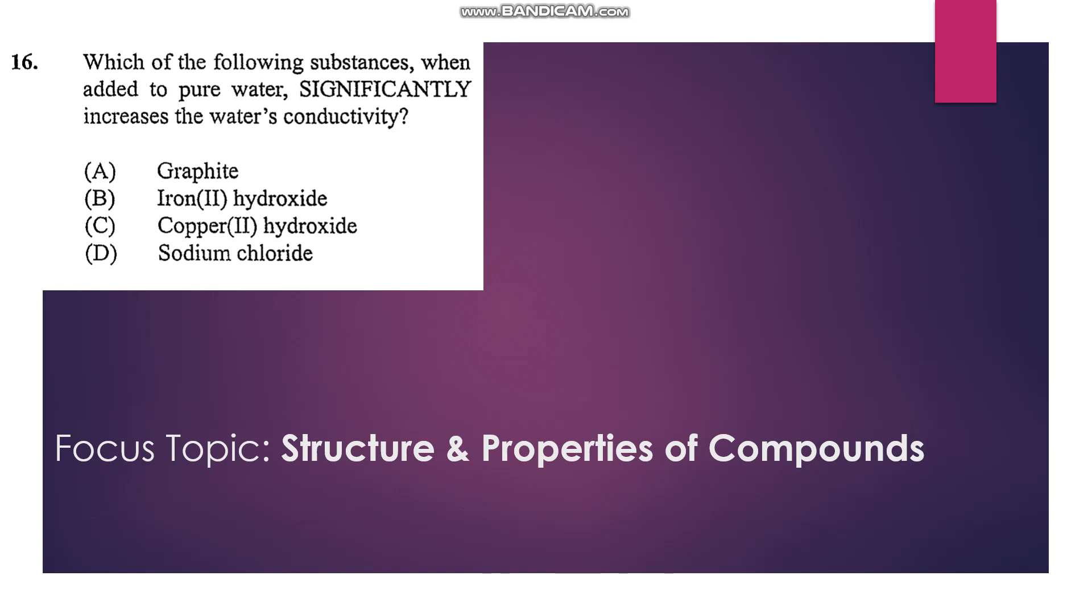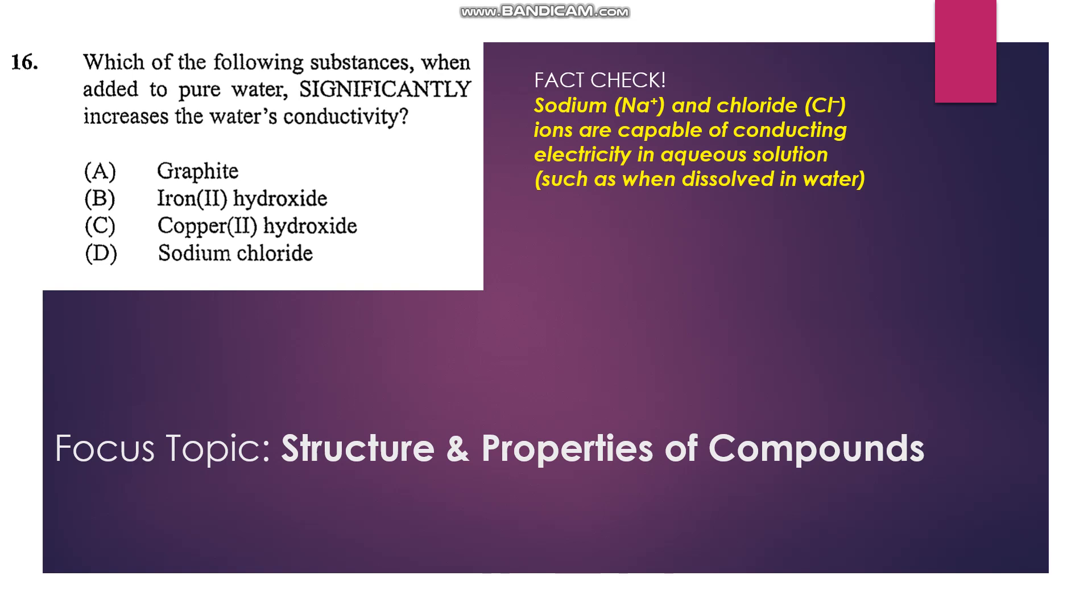Number 16: Which of the following substances when added to pure water significantly increases the water's conductivity? You know that graphite would not dissolve in water, iron hydroxide and copper hydroxide would be insoluble, sodium chloride is soluble and forms sodium ions and chloride ions, so that would be able to allow electricity to pass through. So D is our answer.